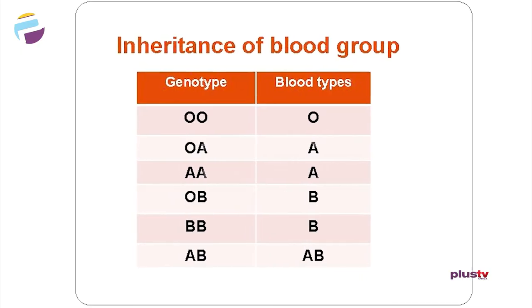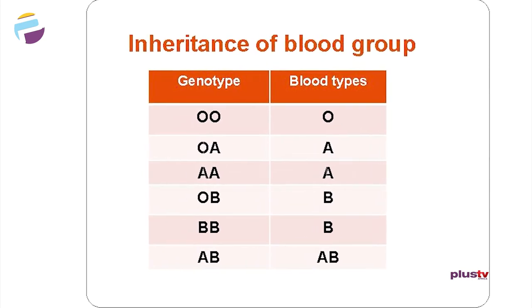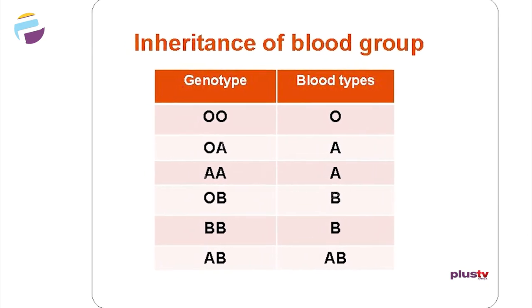Diagnosis of sickle cell disease usually happens after the first year of life, because fetal hemoglobin or maternal blood cells could still be present in that child. So a genotype test is classically done after the first year of life.